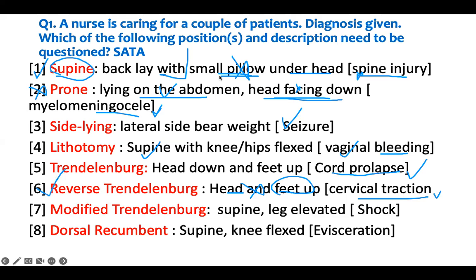The nurse will intervene for that patient. Then modified Trendelenburg - we have Trendelenburg, reverse of that, but then we can modify it. When you modify it, the patient lays in the supine position and their leg is elevated. The head stays flat as they lay supine and the leg is elevated. You can use it for a shock patient - if a patient is in shock, the best position is supine with the leg elevated. So this is right; I don't need to intervene.